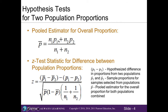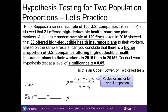Let's look at problem 58 from our textbook and homework. Suppose a random sample of 100 U.S. companies taken in 2015 showed that 21 of them offered high-deductible health insurance plans to their workers. A separate random sample of 120 firms taken in 2016 showed that 30 offered high-deductible health insurance plans. Can we conclude that there is a higher proportion of U.S. companies offering these plans in 2016 than in 2015, at a significance level of alpha = 0.05? We can't just compare sample proportions — we have to account for sampling error using the test statistic.